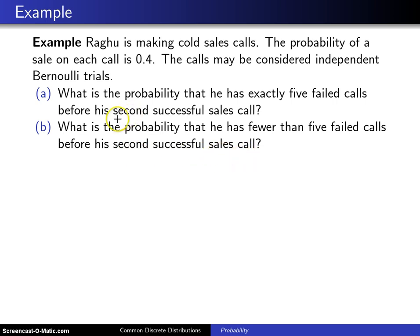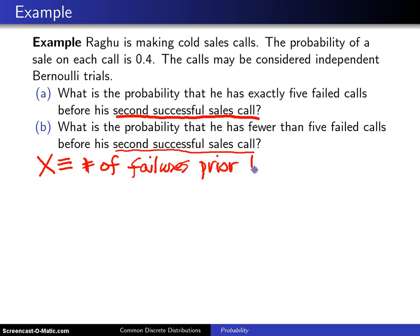The interest in this problem seems to be on the second successful sales call, and that's what brings us to the negative binomial distribution. In this case, the random variable X will be the number of failures prior to the second successful sales call.